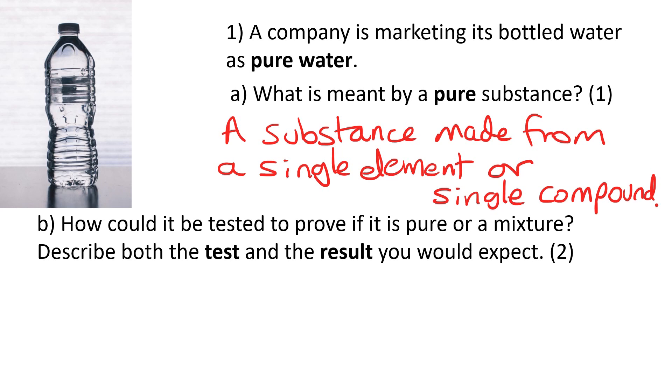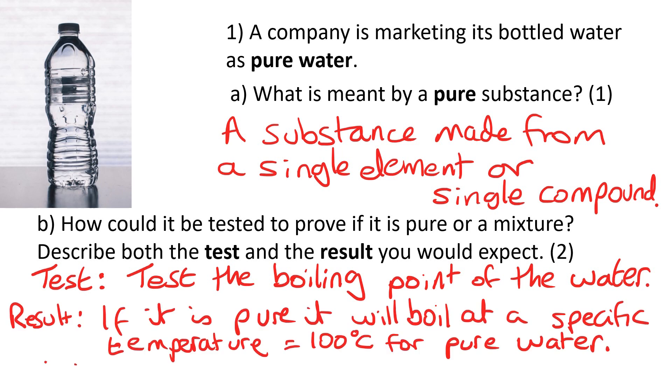How could it be tested to prove if it is pure or a mixture? Describe both the test and the result you would expect. Well, the test would be to test the boiling point of the water, and if it is pure it will boil at a specific temperature, for example 100 degrees C for pure water. If it's a mixture or if it's got any impurities in it, it will boil over a range of temperatures.